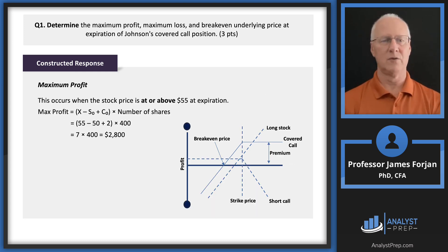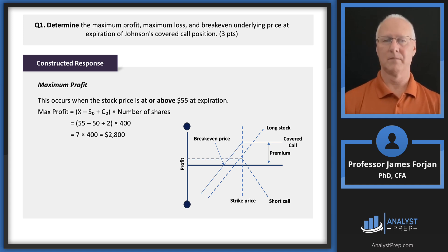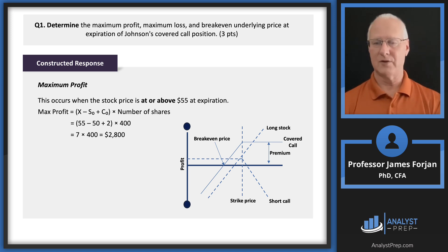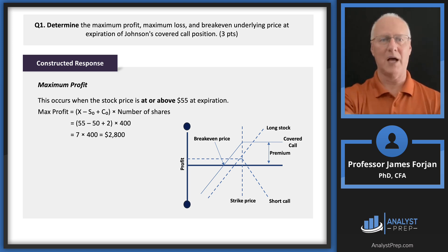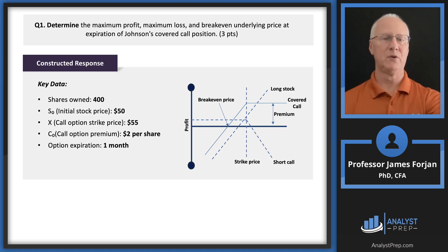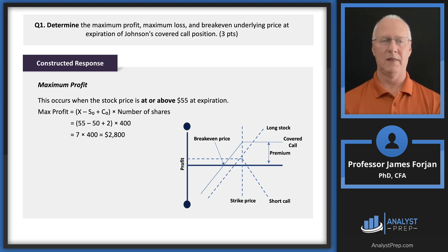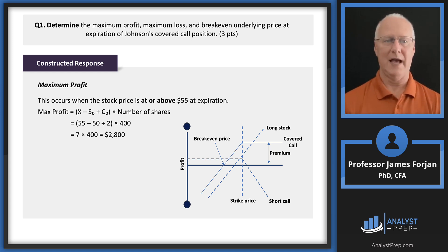So the question then becomes profit, loss, and break-even. Maximum profit: that's the difference between the exercise price and the stock price — $55 minus $50 gives us $5 — plus the premium of $2 that we generated by writing the option. So $55 minus $50 gives you $5, add the $2, get $7, times 400 shares. So $2,800 is the maximum profit.